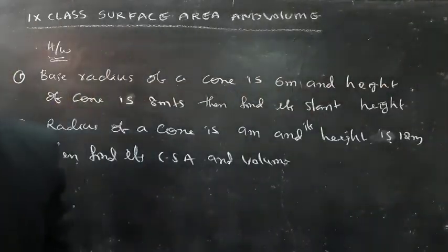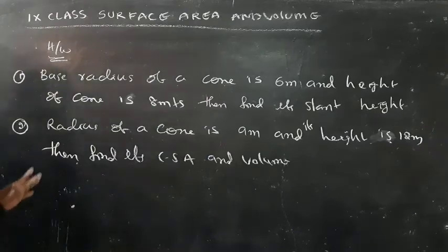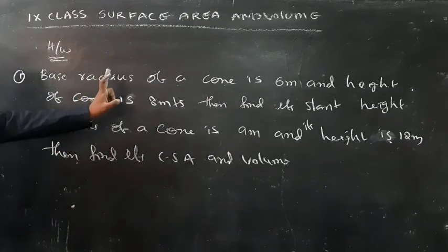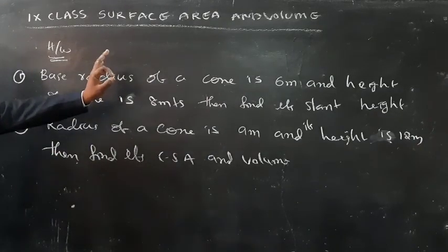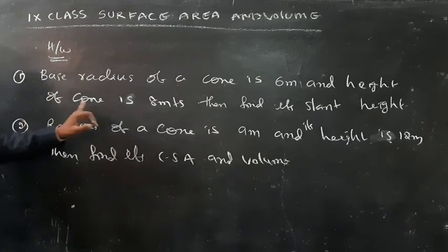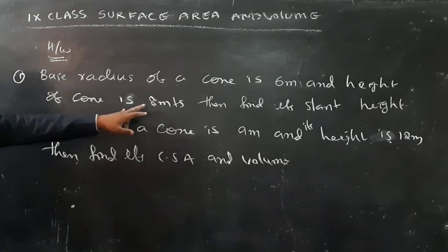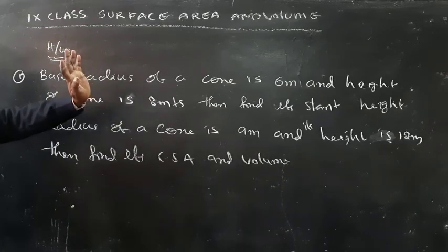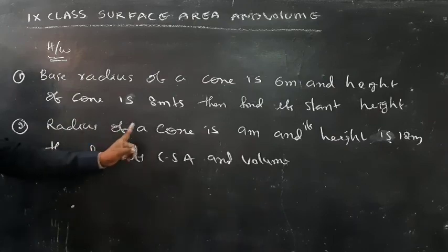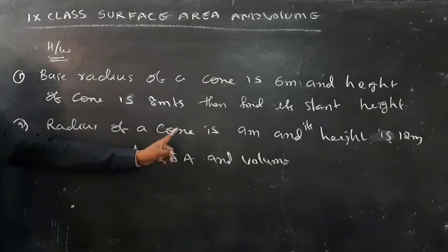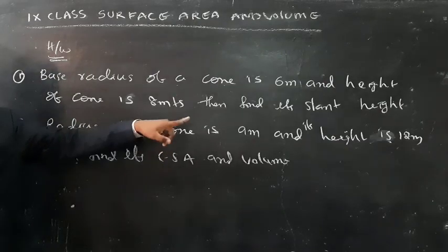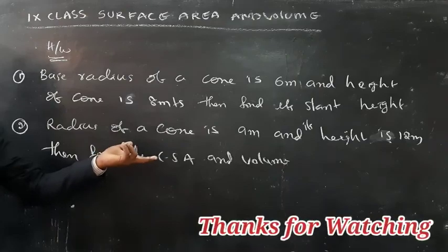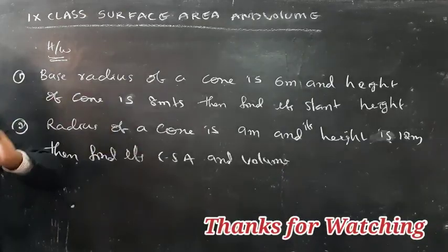Now students, here is a practice problem. The base radius of a cone is 6 meters and the height of the cone is 8 meters. Find the slant height. Another problem: the radius of a cone is 9 meters and the height is 12 meters. Find the curved surface area.